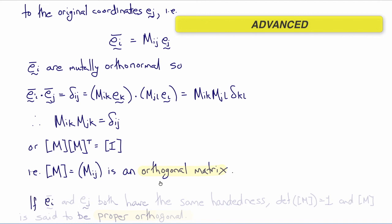This is true provided that ei bar and ej both have the same handedness. In that case, the determinant of m will be positive one, and then m is said to be proper orthogonal. If the handedness switched, then the determinant would be minus one, and it would no longer be a proper orthogonal matrix.